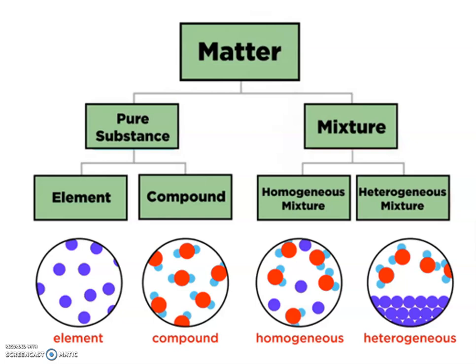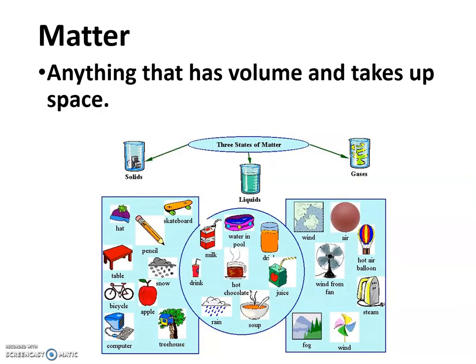And so easy examples that we can talk about are different types of ice cream. So the prefix homo means same. So a homogeneous mixture ice cream would be like vanilla, chocolate. A heterogeneous mixture ice cream would be like cookie dough, cookies and cream. Ones where you can see the different parts that make them up.